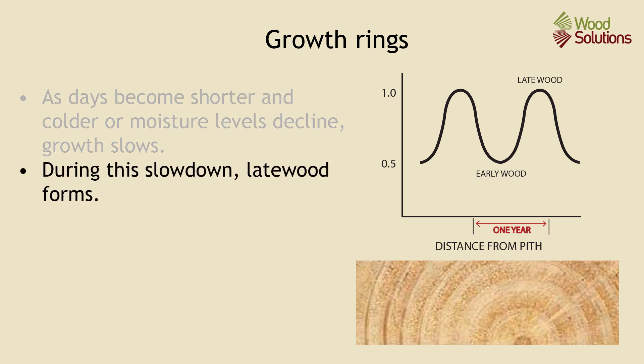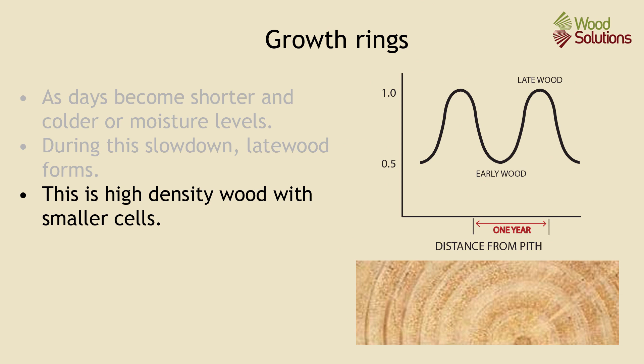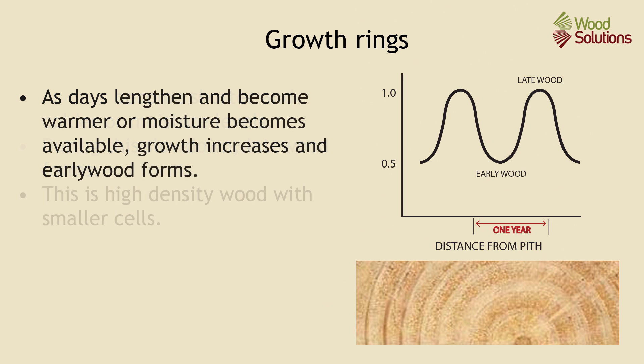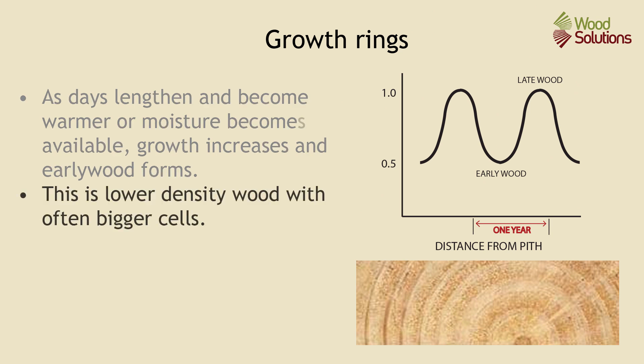During this slowdown, late wood forms. This is higher density wood with smaller cells. These are the darker bands we see in the wood. As days lengthen and become warmer, or moisture becomes available, growth increases and early wood forms. This is lower density wood with often bigger cells. We can chart this variant in density and see that the peaks and troughs line up with the growth rings.